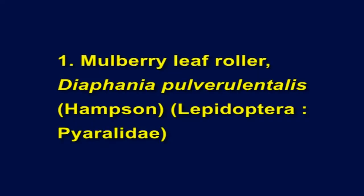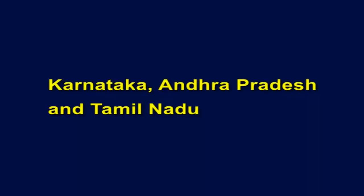The first pest is the mulberry leaf roller, scientific name Diphenia pulverolentalis Hampson, belonging to order Lepidoptera, family Pyralidae. The leaf roller is reported to infest mulberry plantations in Karnataka, Andhra Pradesh, and Tamil Nadu. The infestation causes considerable reduction in leaf yield resulting in cocoon loss to sericulturists. The infestation is observed 20 to 30 days after pruning or leaf harvest. The pest is observed after onset of monsoon, from June, and lasts up to February. The peak period of infestation is observed during September to November.